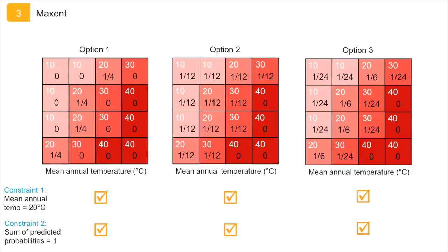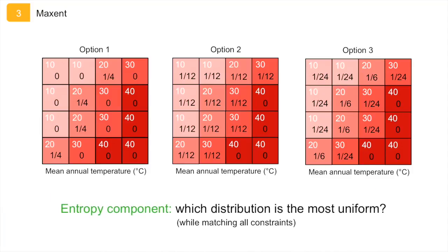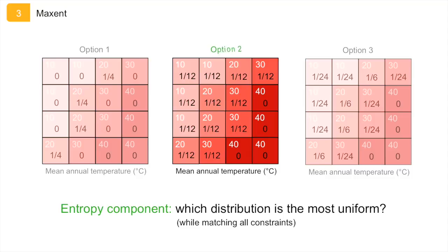This is just an illustration of three options, but there are more potential distributions which meet the constraint that the mean annual temperature of the cells with a predicted presence is 20 degrees. Maxent then queries which of these potential distributions is the most uniform, which in this example is option 2, as it has the most equal spread of probabilities over all cells, while keeping the mean annual temperature across those cells at 20 degrees.